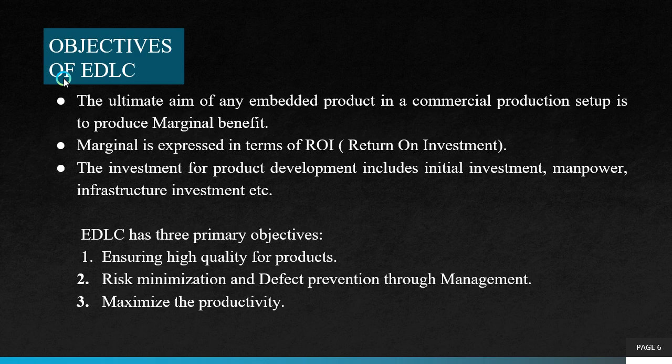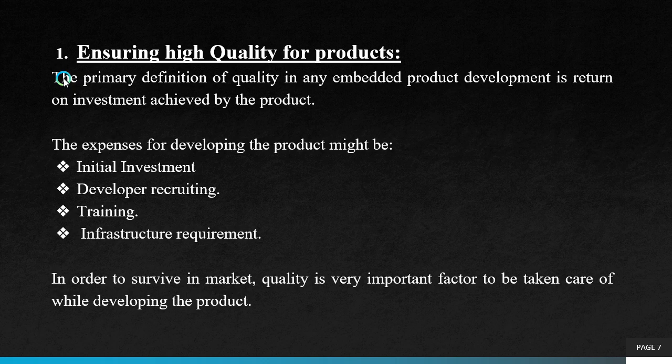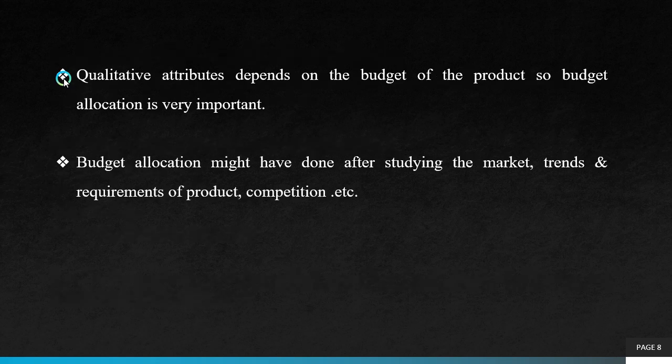EDLC has three primary objectives: ensuring high quality for products, risk minimization and defect prevention through management, and maximizing productivity. The first objective is ensuring high quality for products. The primary definition of quality in any embedded product development is return on investment achieved by the product. The expenses for developing the product might include initial investment, developer recruiting, training, and infrastructure requirements. In order to survive in a market, quality is a very important factor. Qualitative attributes depend on the budget of the product, so budget allocation is very important and is done after studying the market trends, product requirements, and competition.